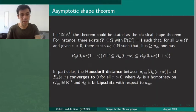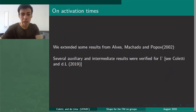If Γ was isomorphic to Z^d we could state it in a more simple way but the Gromov-Hausdorff convergence is needed for our case. We extended several results from Alves, Machado and Popov who studied the model on Z^d. You can verify it in our manuscript.